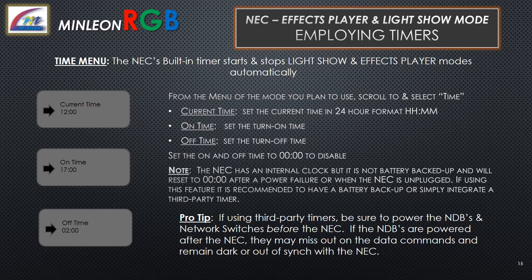Employing Timers. The NEC's built-in timer starts and stops Light Show and Effects Player modes automatically. From the menu of the mode you plan to use, scroll to and select Time. Set the current time in 24-hour format, then set the on time and the off time. Set both on and off times to 0 to disable the timer. Note: the NEC has an internal clock, but it is not battery backed up and will reset to 0 after a power failure or when unplugged. If using this feature, it is recommended to have a battery backup or integrate a third-party timer. Pro tip: if using third-party timers, be sure to power the NDBs and network switches before the NEC, as NDBs powered after the NEC may miss data commands and remain dark or out of sync.